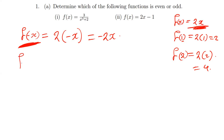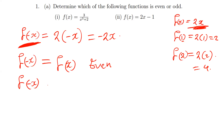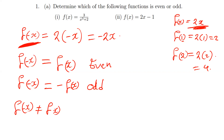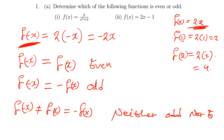If you find f of negative x and the function still gives you the same function as the solution, the given function is even. If you find f of negative x and the answer is negative of the same function, then the function is odd. And if f of negative x is not equal to f(x) and also not equal to negative f(x), then the function is neither odd nor even.